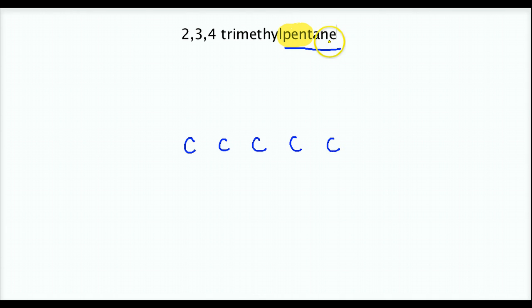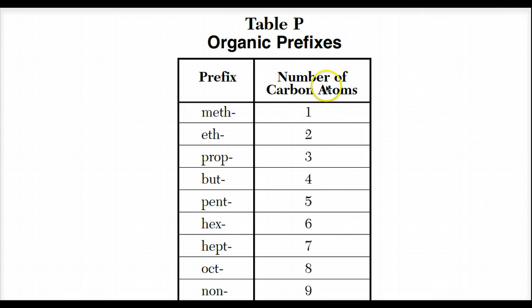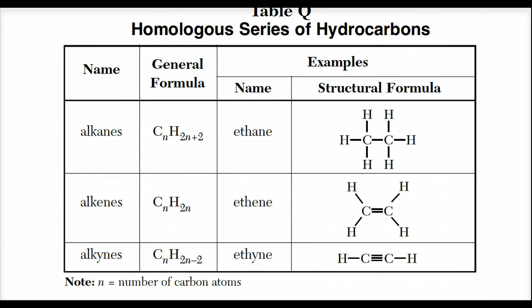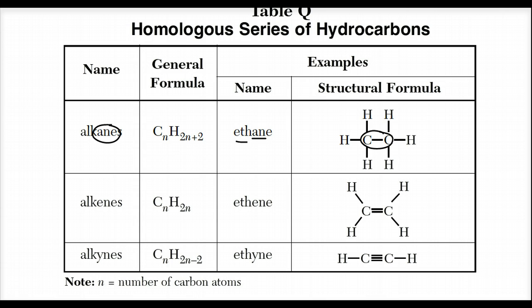Now, the next part I'm going to look at is the ane part of the suffix here. And this ane here tells me I have alkanes. I have single bonds between my carbons. How do I know there's single bonds? I go to my table, where I use table P to tell me how many carbons are in my longest continuous chain. I use table Q to remind myself that anes are single bonded hydrocarbons. So I got my single bonds because of the ane, pent for the five carbons, my longest continuous chain. And then I'm going to start looking to see what's attaching to my longest continuous chain.